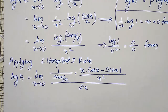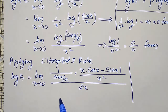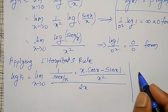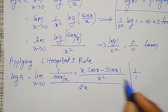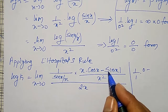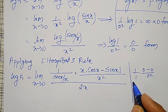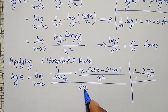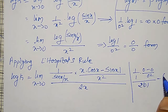Substituting x equal to zero shows this is again in indeterminate form: 1 divided by (sin x / x as x→0 is 1) times (0·cos 0 − sin 0) divided by 0², all divided by 2 times 0, which is again 0/0 form.